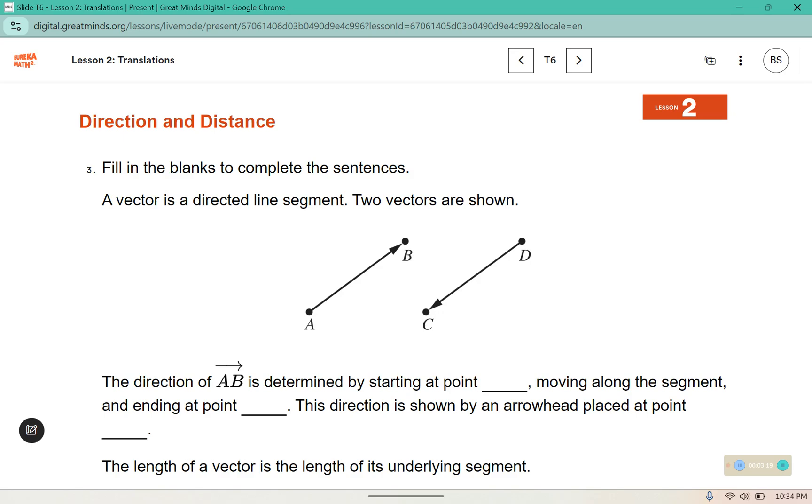So the direction of AB is determined by starting at point A, and moving along the segment, and ending at point B.